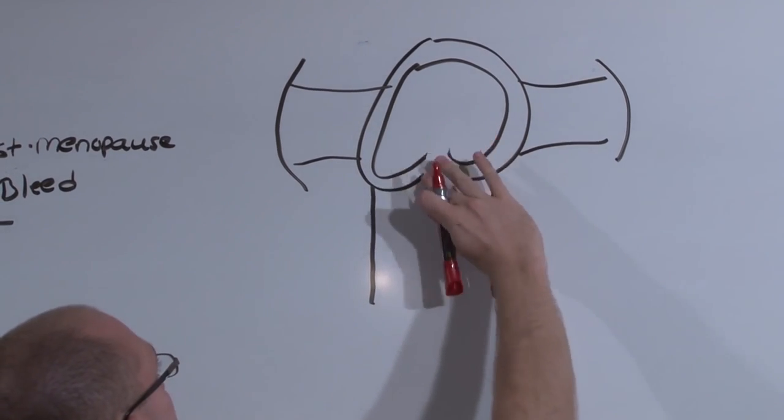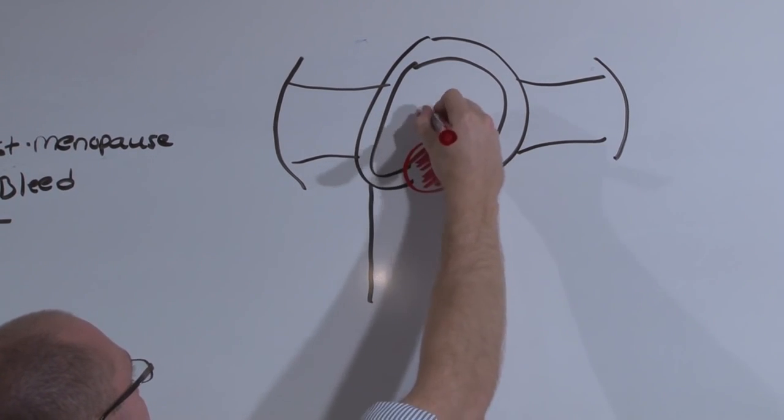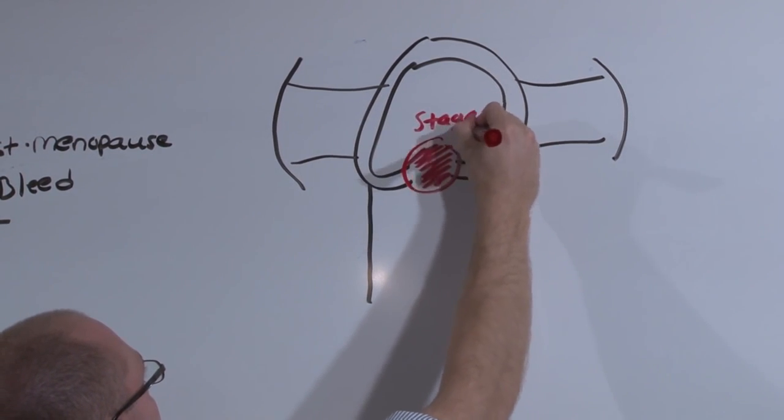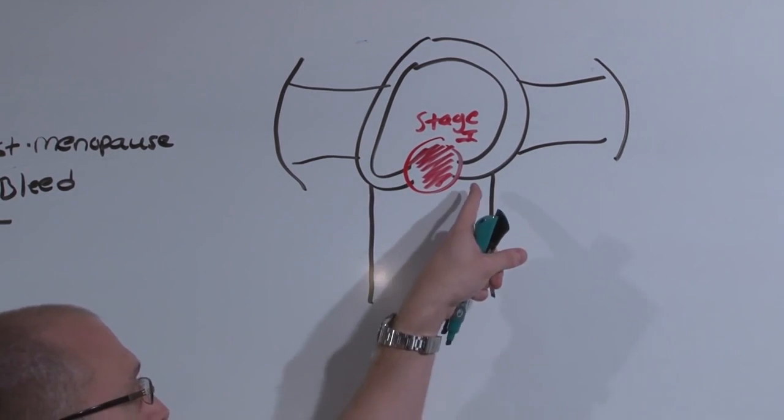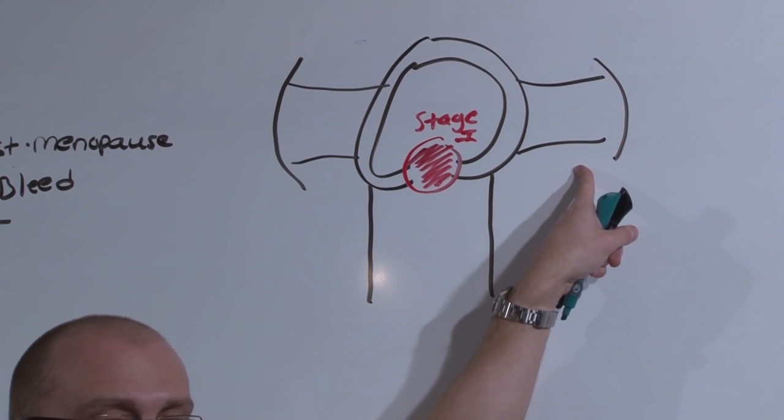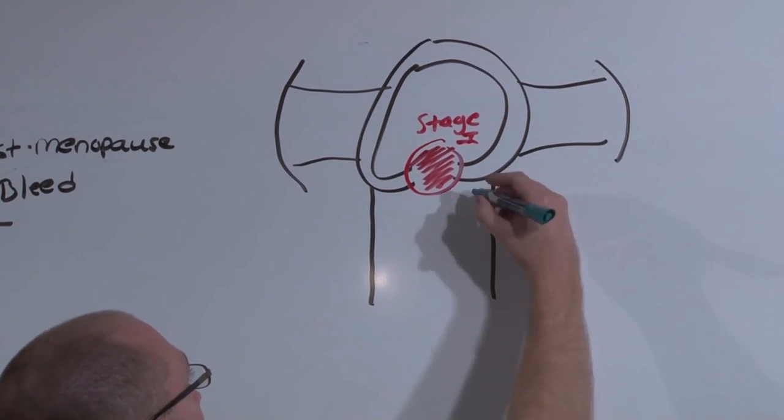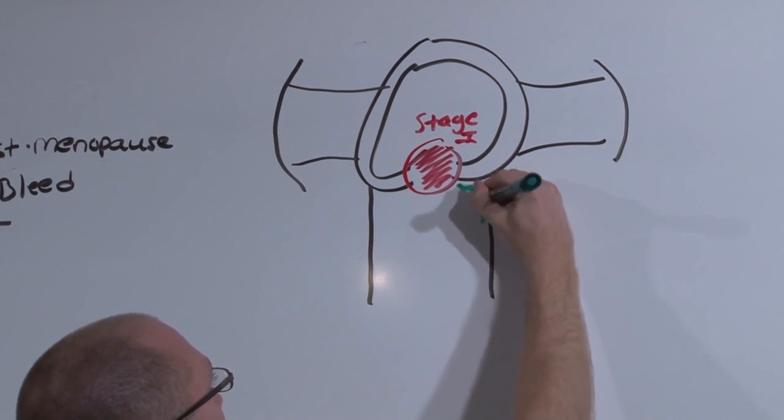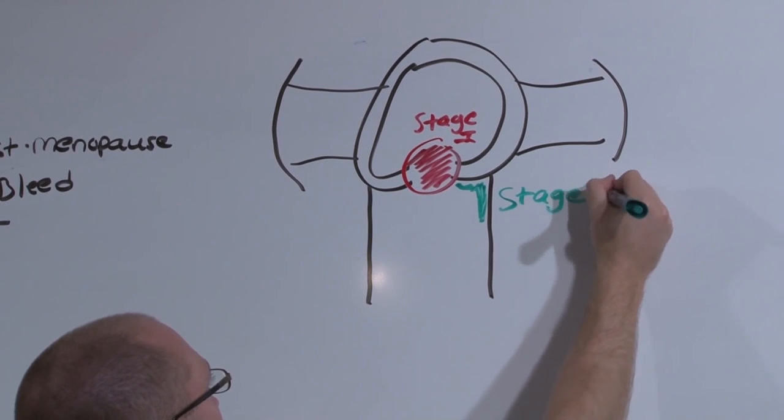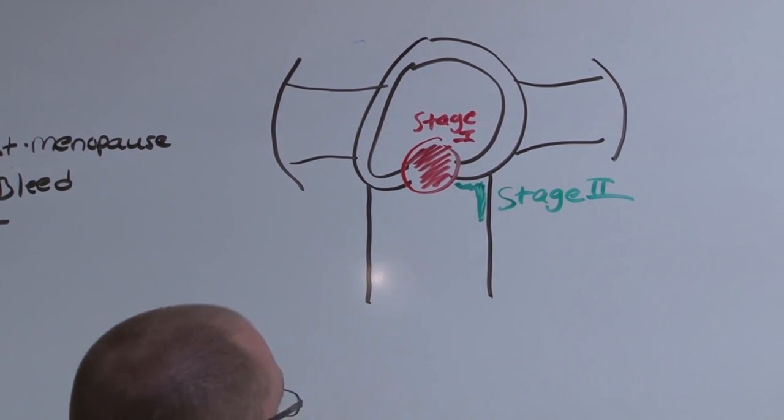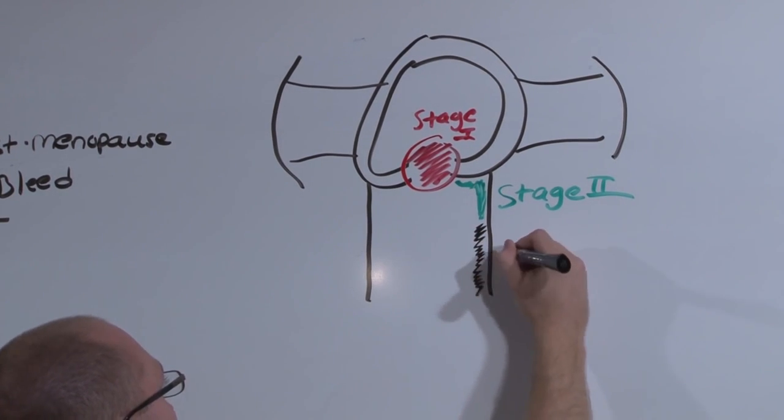Stage 1 involves only the cervix itself. It has no involvement of the vagina, the cardinal ligament, or the pelvic sidewall. Stage 2 begins to involve the upper third of the vagina, and stage 3 involves all of the vagina.